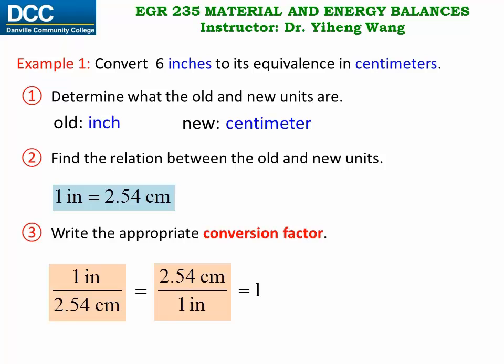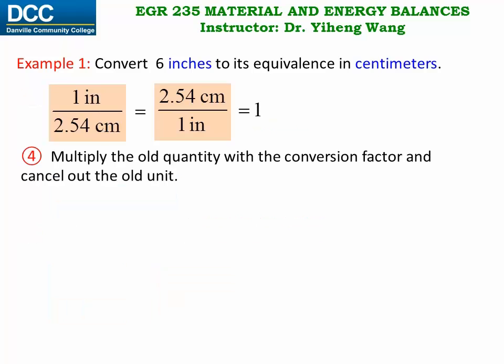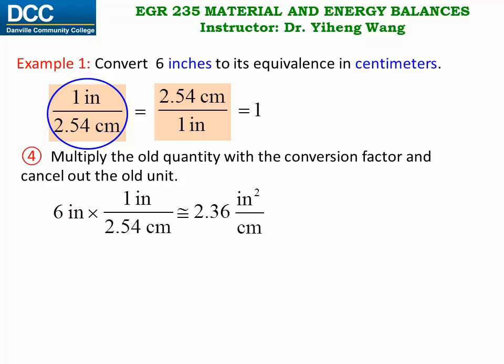Now the question is: we have two conversion factors — which one should we use? For the fourth step we need to multiply our given quantity, 6 inches, by one of these two conversion factors. Let's say we try the first one: 6 inches multiplied by 1 inch over 2.54 centimeters is approximately 2.36 with a strange unit of inch squared over centimeter. Although mathematically this is correct, it is obviously not helpful at all because it does not serve the purpose of unit conversion.